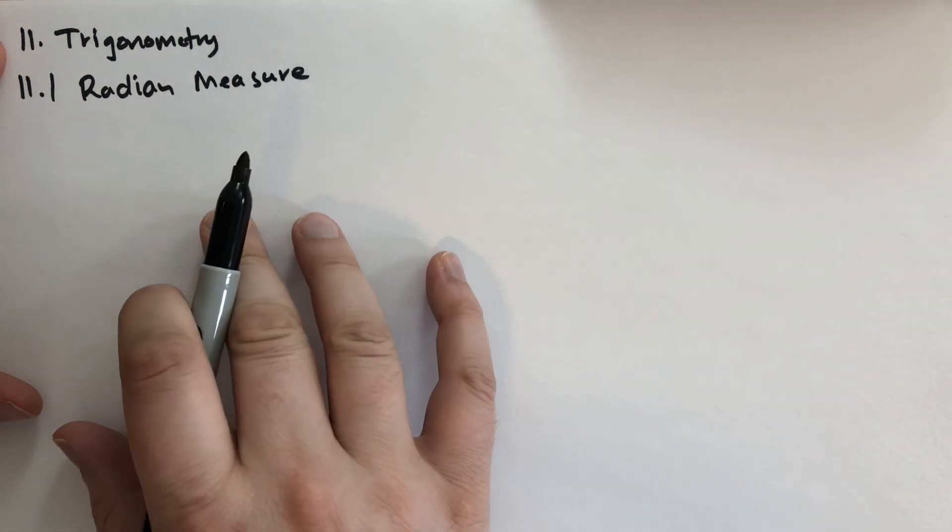When you use degrees, you take the unit circle and you cut it up into 360 little pieces and each of those little pieces is a degree. It's useful because we have this experience since Babylonian times of using it. But as you progress in mathematics, you begin to understand that it's not a very natural system of measuring angles.